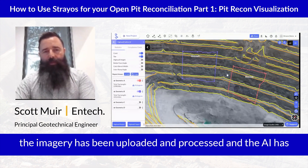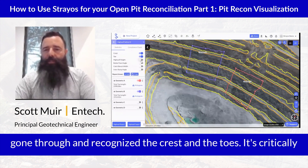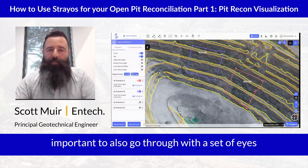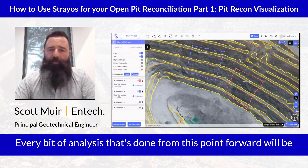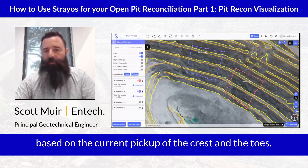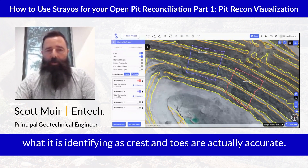Once the imagery has been uploaded and processed and the AI has gone through and recognised the crests and toes, it's critically important to also go through with a set of eyes and validate what it's picked up. Every bit of analysis done from this point forward will be based on the current pickup of the crest and toes, so you always want to make sure that what it is identifying as crests and toes are actually accurate.